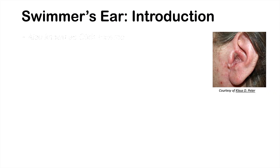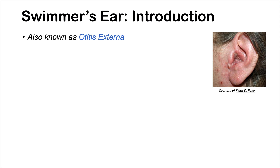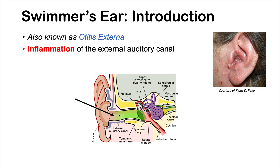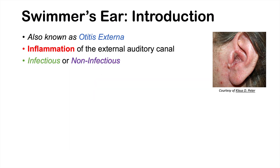Swimmer's ear is also known as otitis externa. If we break that word down, 'oto' refers to the ear, 'itis' refers to inflammation, and 'externa' means external. So it's inflammation of the external ear — more specifically, inflammation of the external auditory canal. It can be due to infectious or non-infectious causes, though it's more likely to be caused by an infection. We'll talk about the bacteria and fungi that cause infection later in this lesson.